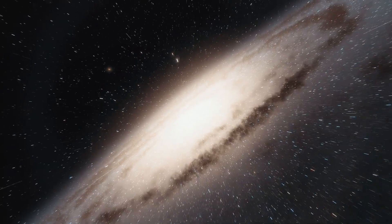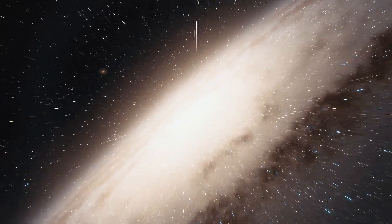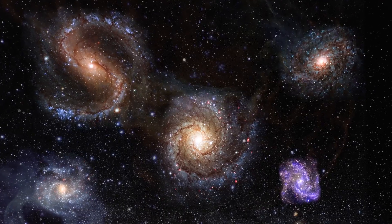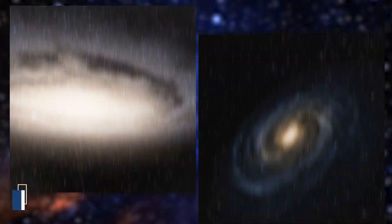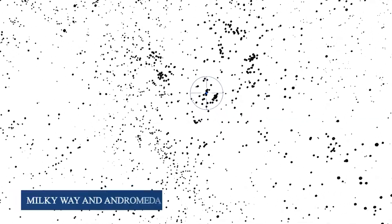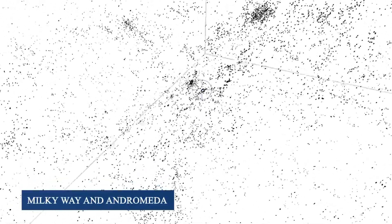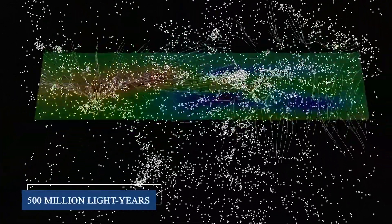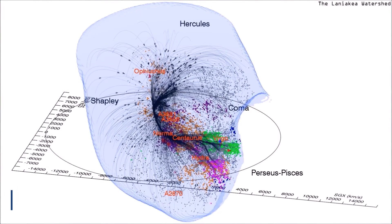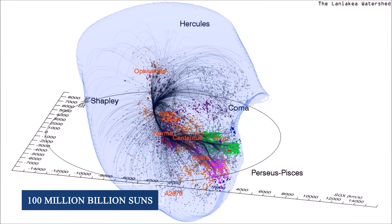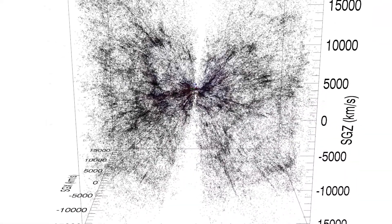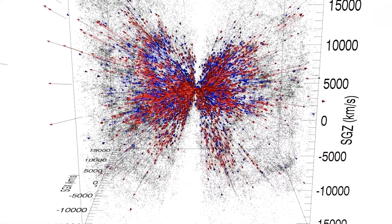But perhaps the most incredible discovery is how all of these structures connect to something much larger. Our entire local group of galaxies, including the Milky Way and Andromeda, is part of an enormous structure called the Laniakea supercluster. This cosmic web of galaxies spans over 500 million light-years, and contains the mass of 100 million billion suns. What's remarkable is that much of Laniakea's mass lies above the plane of our galaxy, stretching northward into space.